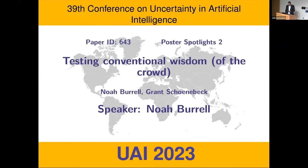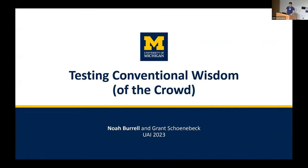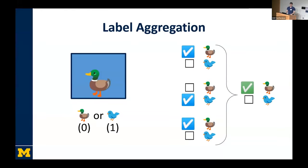Yeah, so the next poster is on testing conventional wisdom of the crowd. So label aggregation is a crowdsourcing setting where workers are presented with some object like an image or a piece of text, and they're asked to select the correct label from some finite set. So you might imagine that we can show people a bunch of pictures of birds and ask them, is this bird a duck or a bluebird? And in order to try to recover the true labels as accurately as possible, we'll ask multiple people, we'll get different answers, and we'll try to combine their answers into a predicted label.